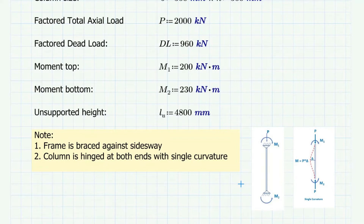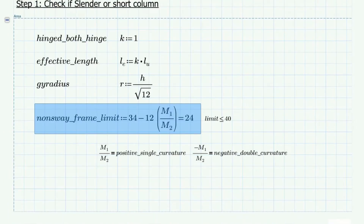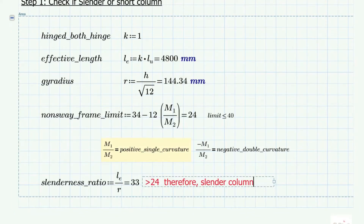The column is hinged at both ends, which means the effective length factor equals 1, so we don't need to calculate the psi values for the alignment chart. It also says it has single curvature, meaning the deflected shape is C-shaped. For a non-sway frame, the slenderness ratio limit is calculated as 34 minus 12 times M1 over M2, where M1/M2 is positive for single curvature (C-shape) and negative for double curvature (S-shape). This limit has a maximum value of 40. We check the slenderness ratio of the column: it equals 33, which is greater than the limit, so this is a slender column.